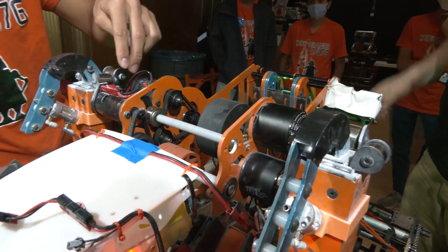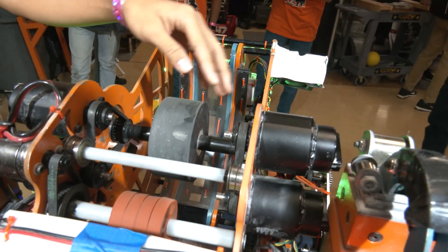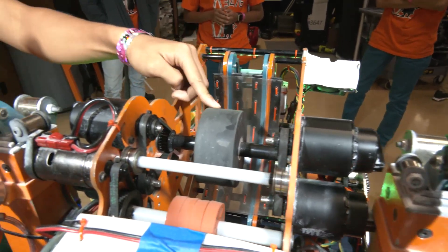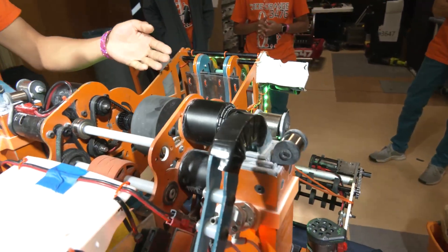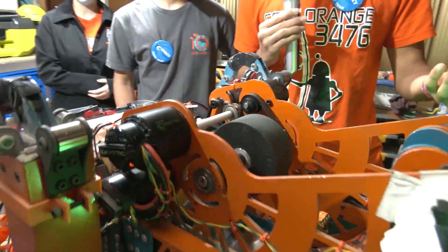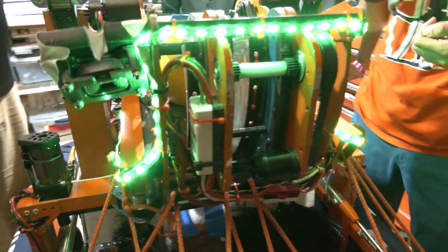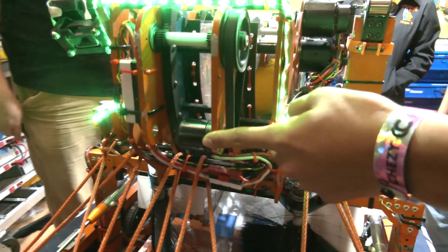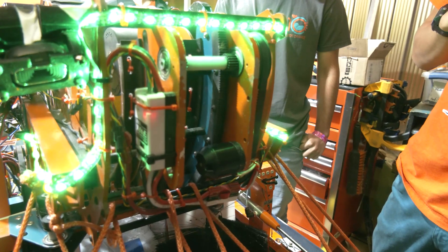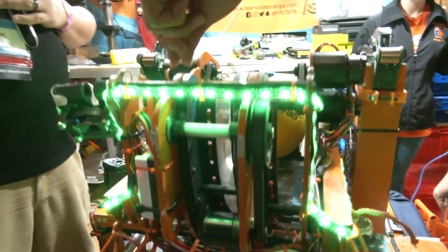I'll just start from here. We have a 775 pro driving the feeder wheel. Looking over here at the flywheel we have four falcons driving this four inch flywheel and it's made of polyurethane. This allows us to spin up the shooter really quickly when we want to. If we're playing against defense we can stop the shooter and then once we get to place it'll just spin up right away. We have a neo 550 right here driving the hood. The neo 550 has a really high rpm so we can adjust for our hood shots really quickly. These plates are all made of quarter inch.